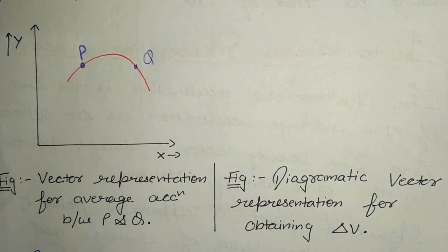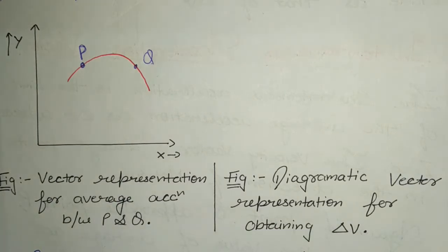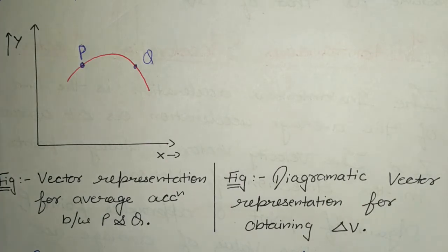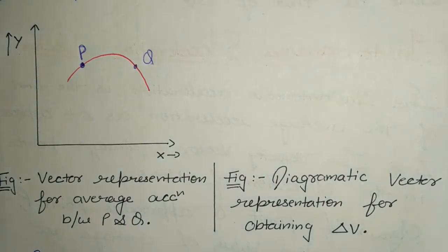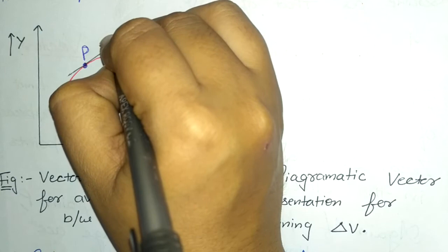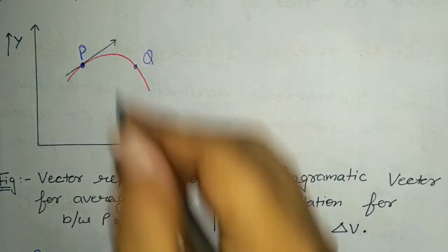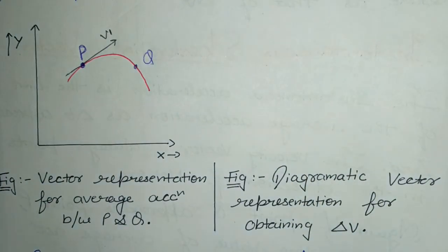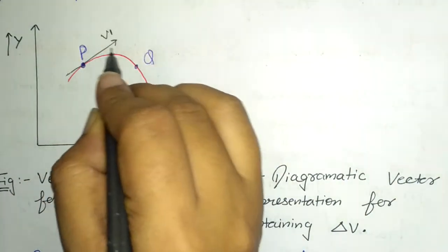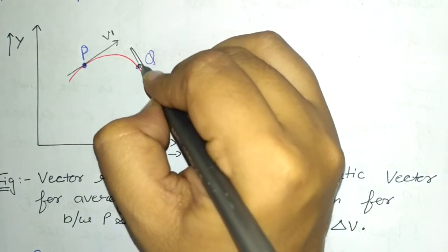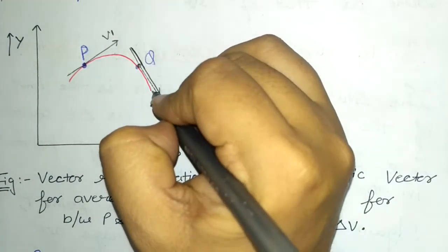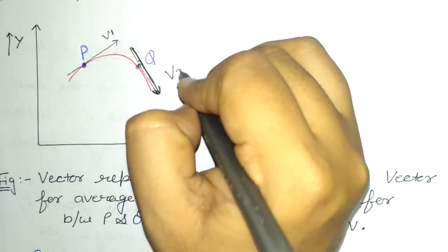Now if we want to see the velocity at P and Q — as we discussed in a previous video, the velocity of a point is tangential to the path. So the velocity at point P is in the tangential direction, and we represent it as V1. Similarly, the velocity at point Q is V2.